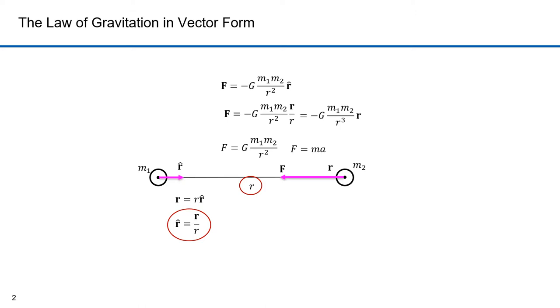Because the unit vector r equals the vector r over the scalar r, I can substitute that into the force equation, which simplifies to minus g m1 m2 over r cubed times the vector r. This form of the equation comes in handy when I take derivatives. I want to take the derivative of the vector r. The unit vector will change direction but will not change in magnitude, so it doesn't make sense to take the derivative of that unit vector.